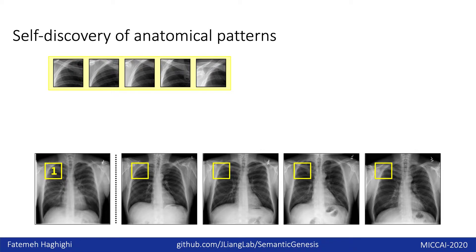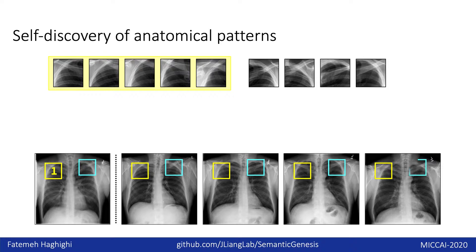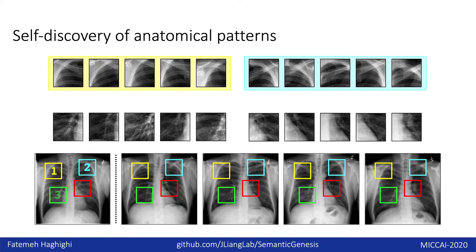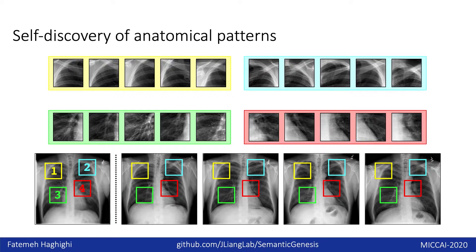We assign a unique class label to these similar anatomical patterns. We then take another random coordinate and crop patches around it, which form our class number 2. Similarly, we do this for classes 3 and 4, which are shown here in green and red, respectively. Even though there are only 4 classes shown in this example, in our study we do this for multiple classes, each representing a unique anatomical pattern.